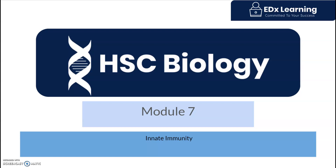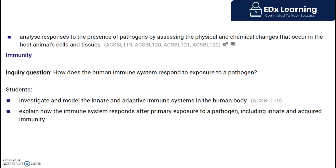This is part one of our immune response lecture series. In this video, we're going to discuss the physical and chemical barriers that pathogens need to overcome to cause an immune response. This is under module 7, infectious disease, and the particular inquiry question is immunity and how the immune system responds to a pathogen.